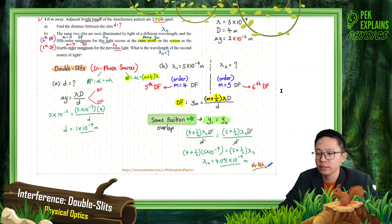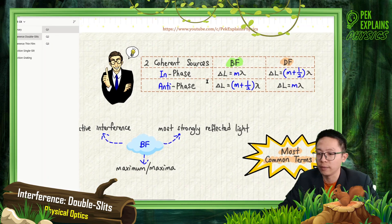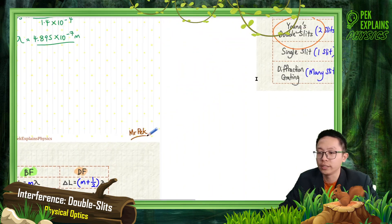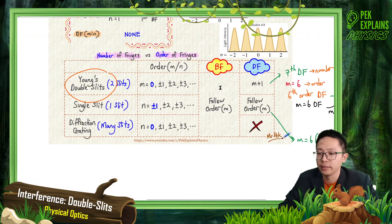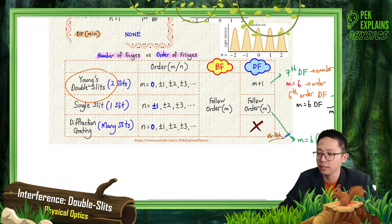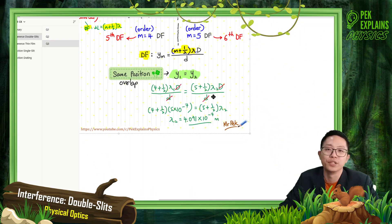This is a straightforward question — you just have to remember to identify whether it's in-phase or anti-phase source. If in-phase, use the in-phase formula; if anti-phase, use that formula. Also remember for double slit: bright fringe follows order M, dark fringe is M+1 in terms of fringe count. These are the key points. That's the end of these questions — see you in the next video.